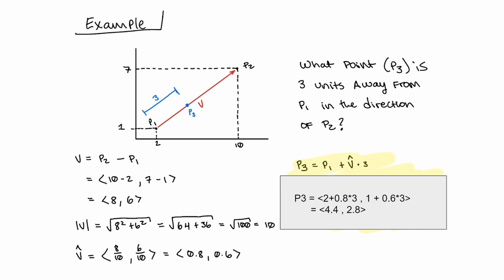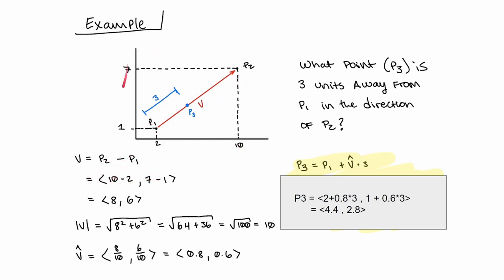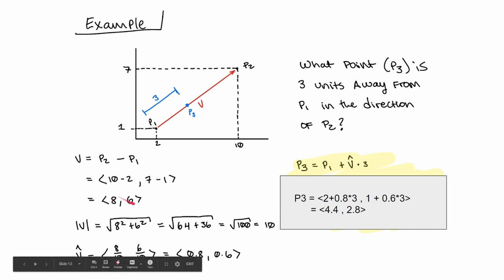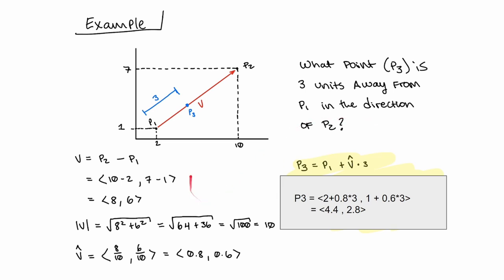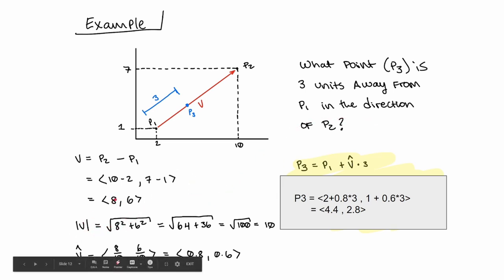Let's hop into an example. If we have two points P1 and P2, what point P3 is three units away from P1 in the direction of P2? The first thing we do is make the vector V — that's just P2 minus P1, because to make a vector between two points you subtract them. So P2 minus P1 gives us V: 10 minus 2 for X, and 7 minus 1 for Y, which is the vector 8, 6. Then we find the magnitude: the square root of 8 squared plus 6 squared equals the square root of 64 plus 36, which is the square root of 100, which is 10.